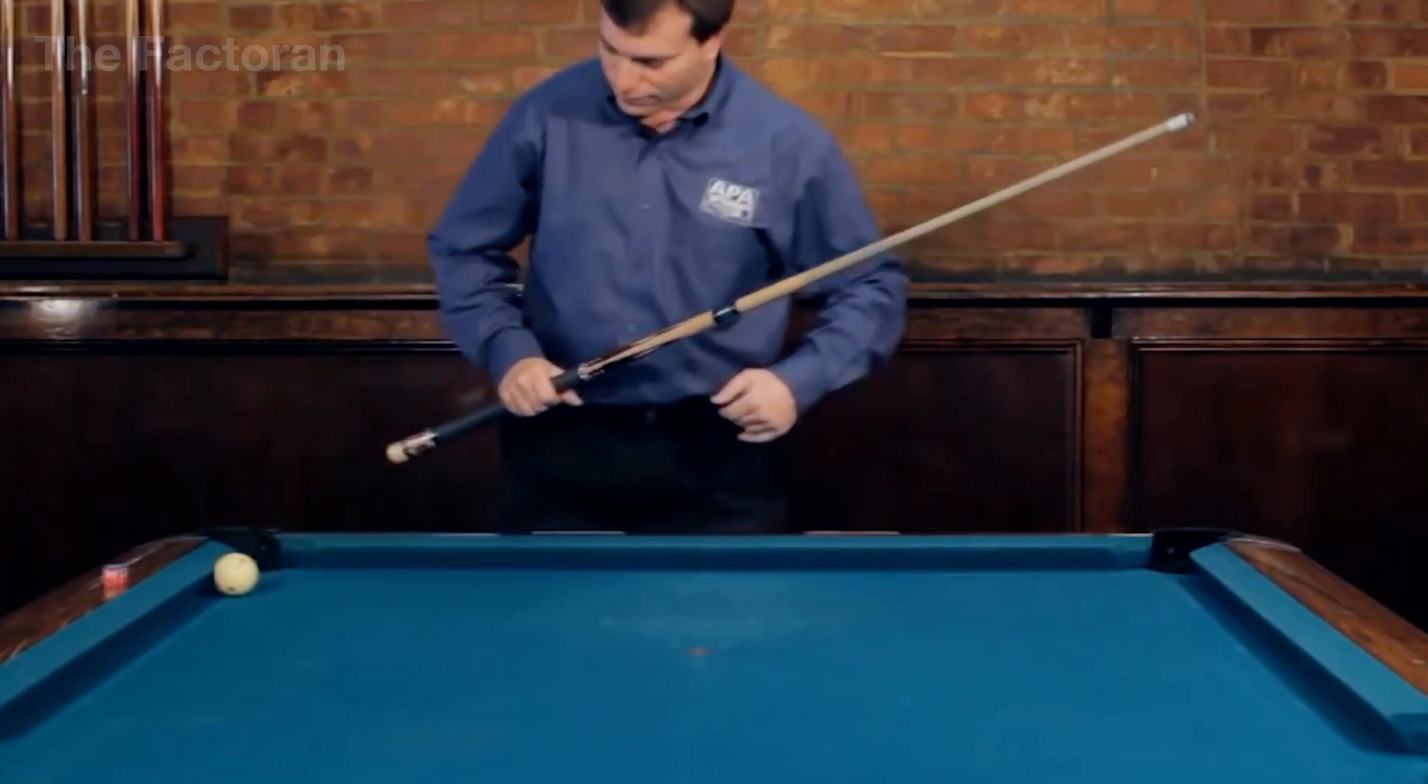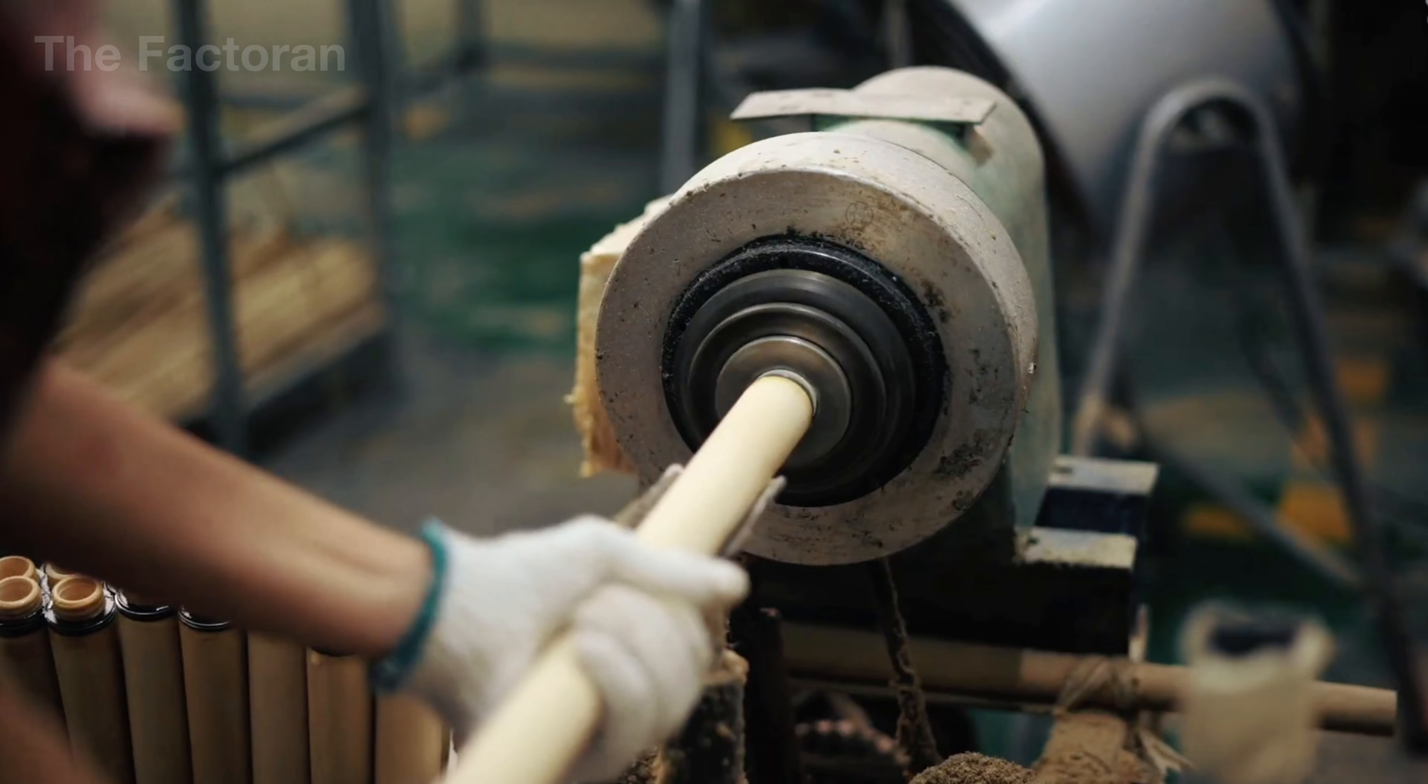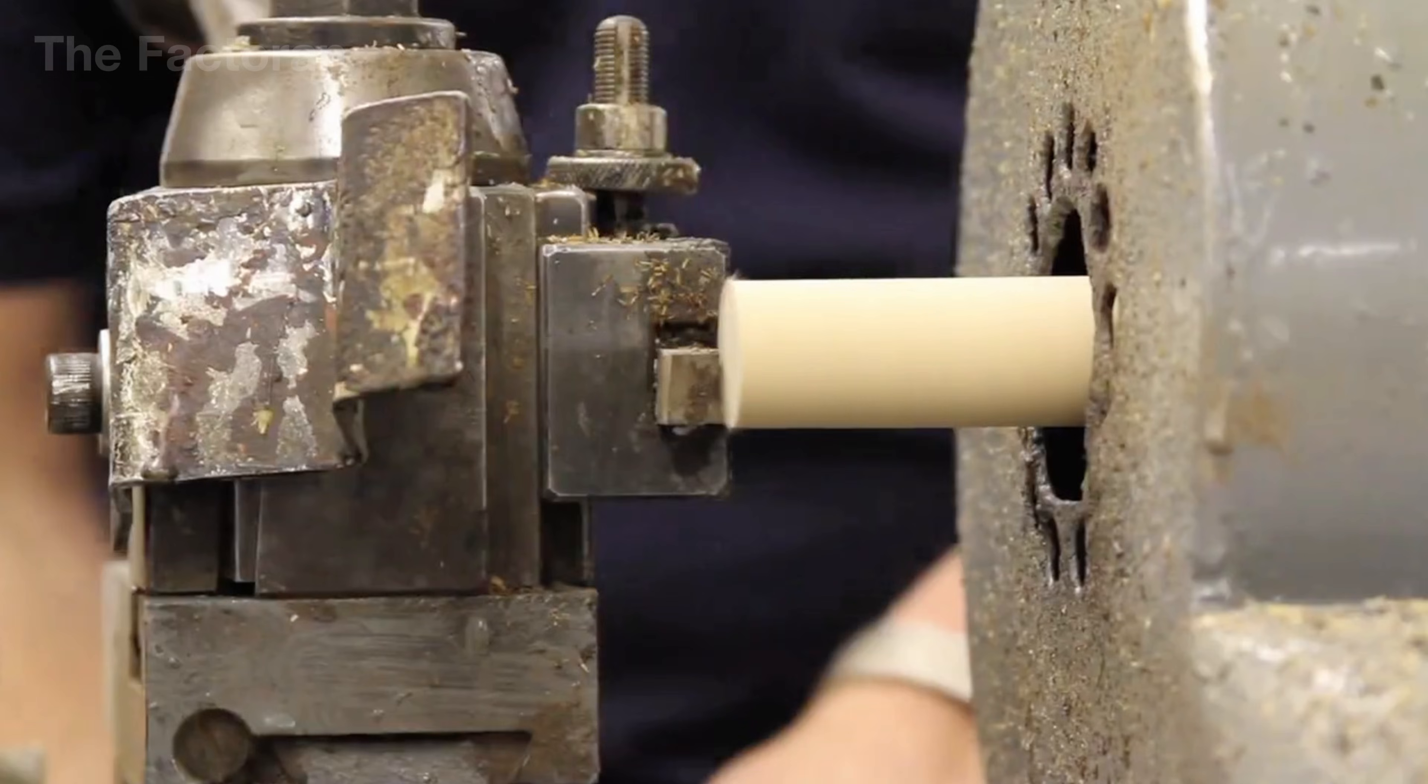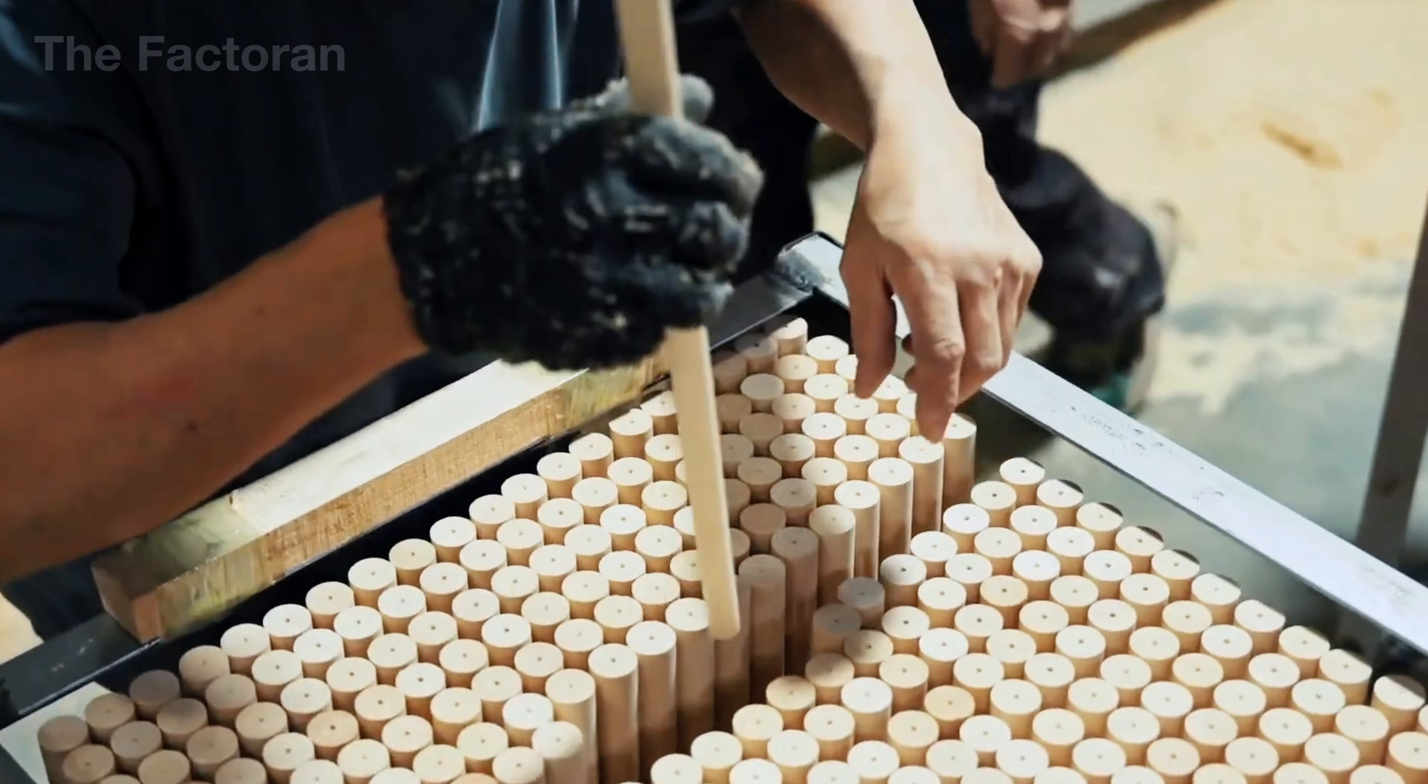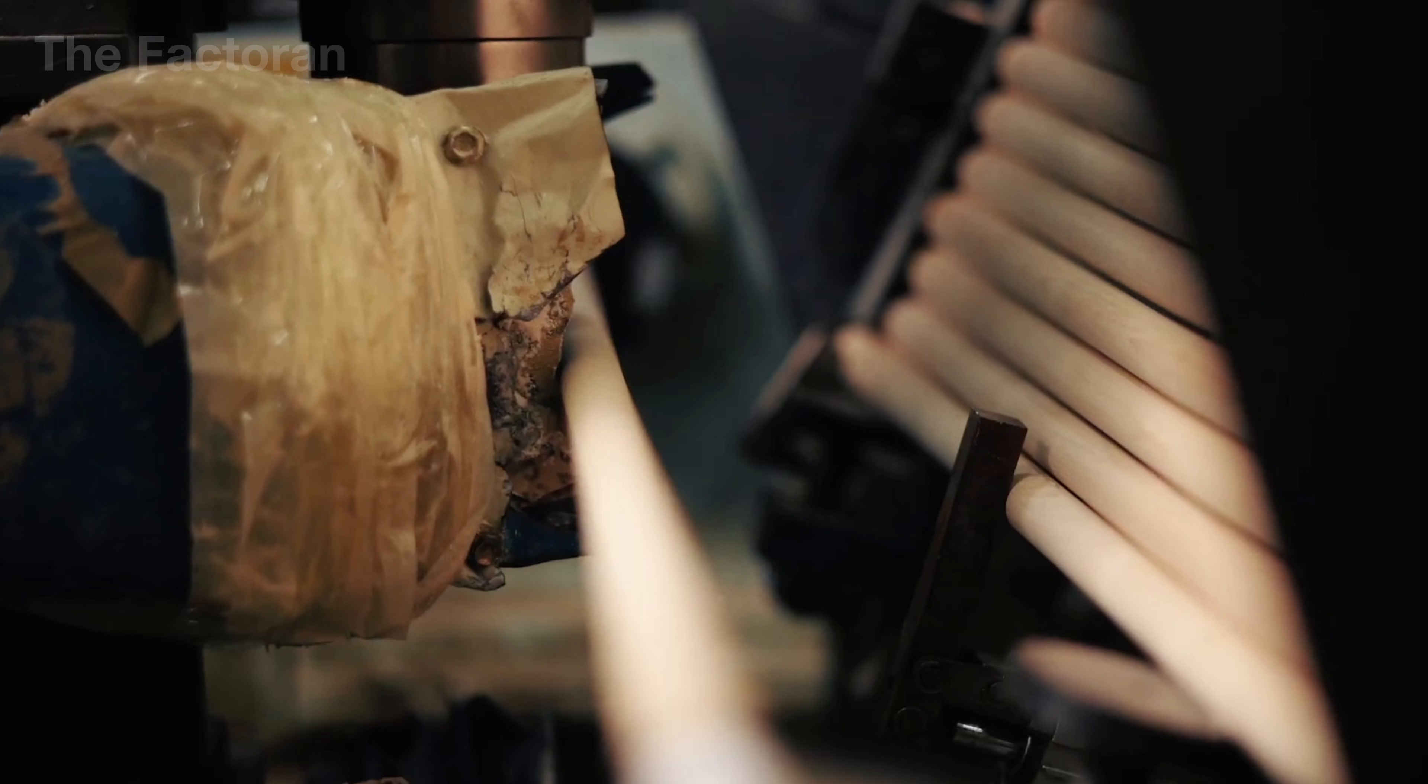Behind every smooth and precise shot lies an entire chain of extremely strict manufacturing processes, controlled down to the smallest fraction of an inch. From selecting wood with flawless grain structure, to meticulous shaping and machining, and finally to the perfect surface finishing stage, where not a single imperfection is allowed, ensuring the cue achieves maximum stability and ideal feedback during play.